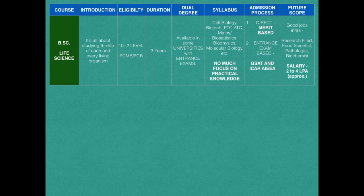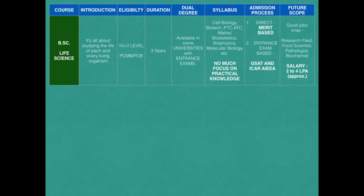The admission process is direct merit-based or entrance exam based. Entrance exams include GSAT — for GIPAM University — and ICAR AIEEA, which is for Indian Agricultural Research Institute, National Dairy Research Institute, Indian Veterinary Research Institute, and Central Institute of Fisheries Education. The future scope: after doing a BSc or MSc in this, you might get good jobs as research field scientist, pathologist, biochemist, etc. The salary ranges from 2 to 4 lakhs per annum.